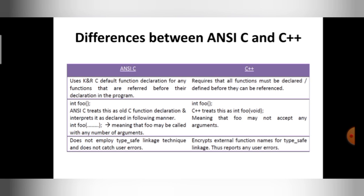Third difference, the last difference. ANSI C does not have any type-safe linkage technique. Type-safe linkage technique means if you do any errors while declaring the function or while defining the function, those errors are not identified by your ANSI C compiler. As a user, you have to find out the mistake and you have to correct it.